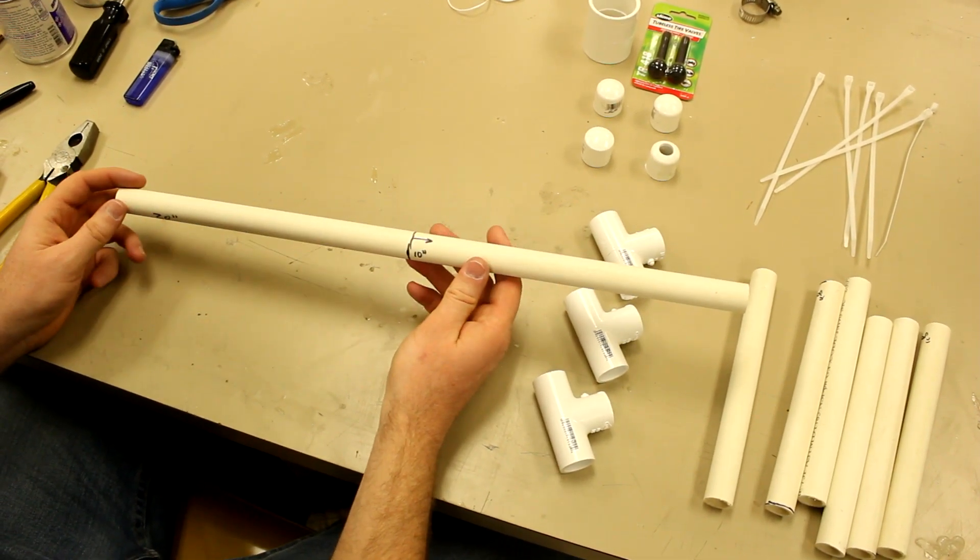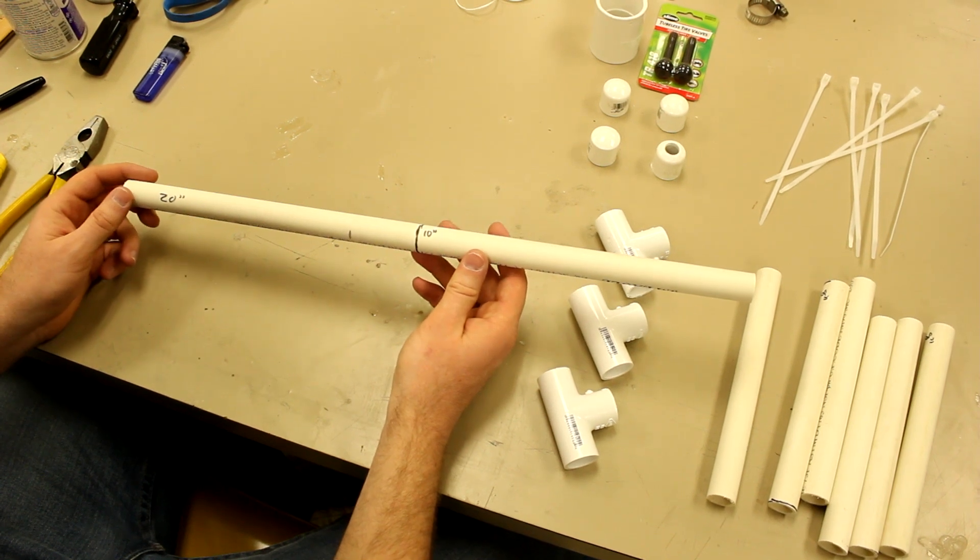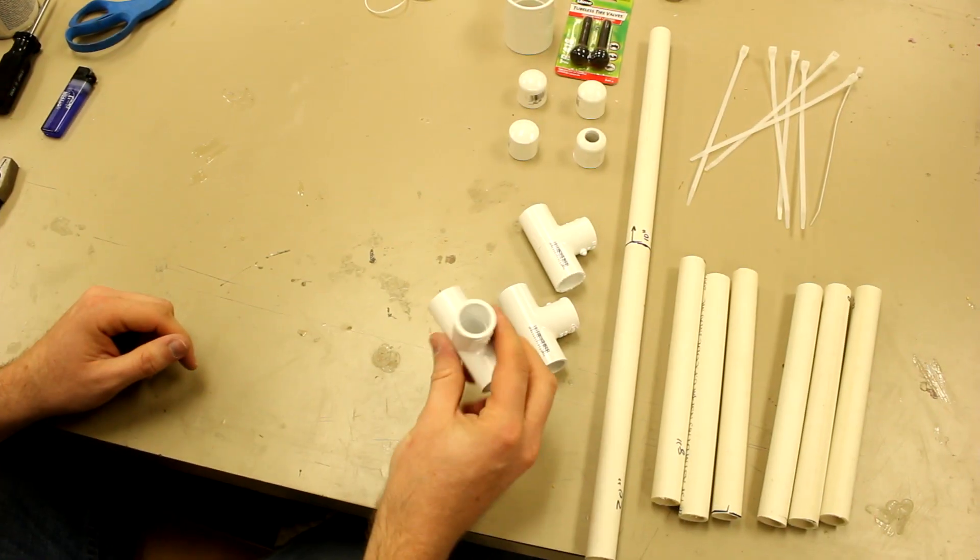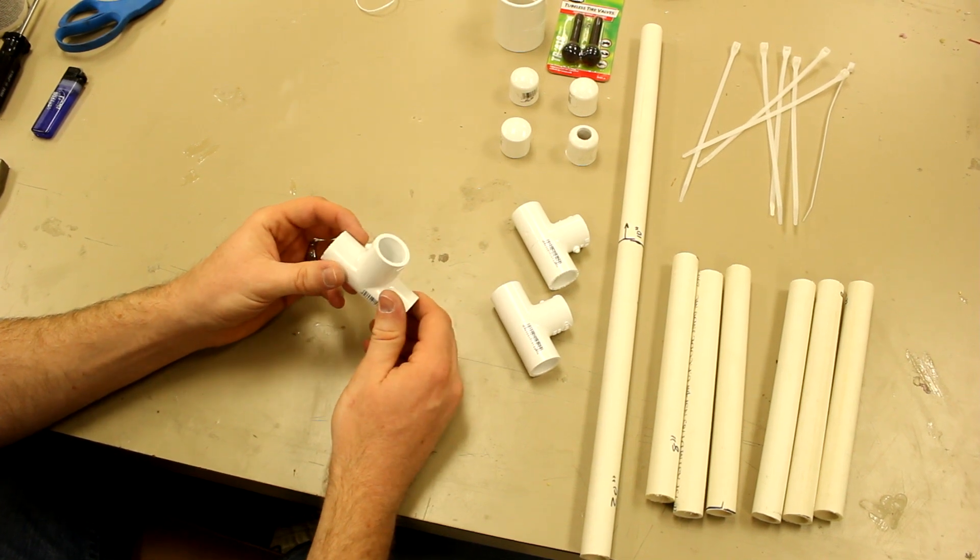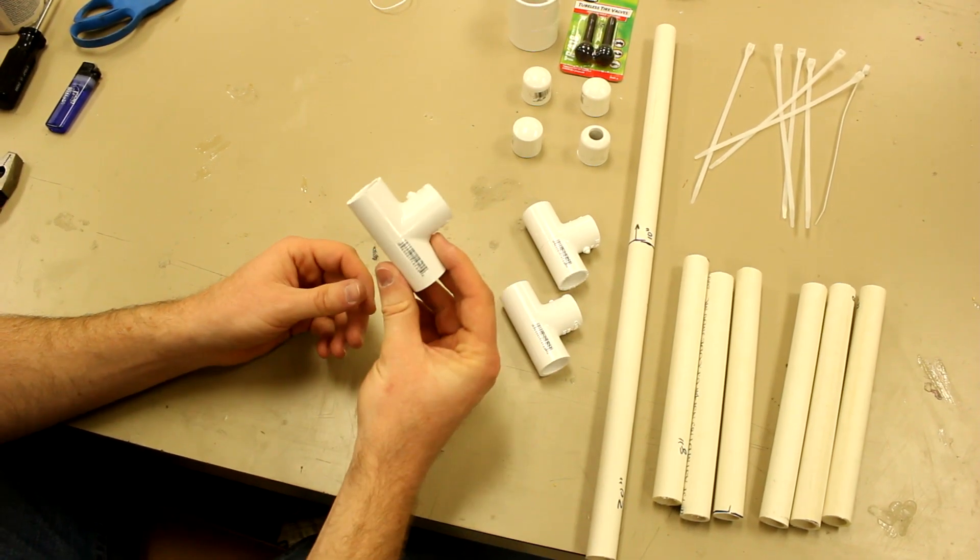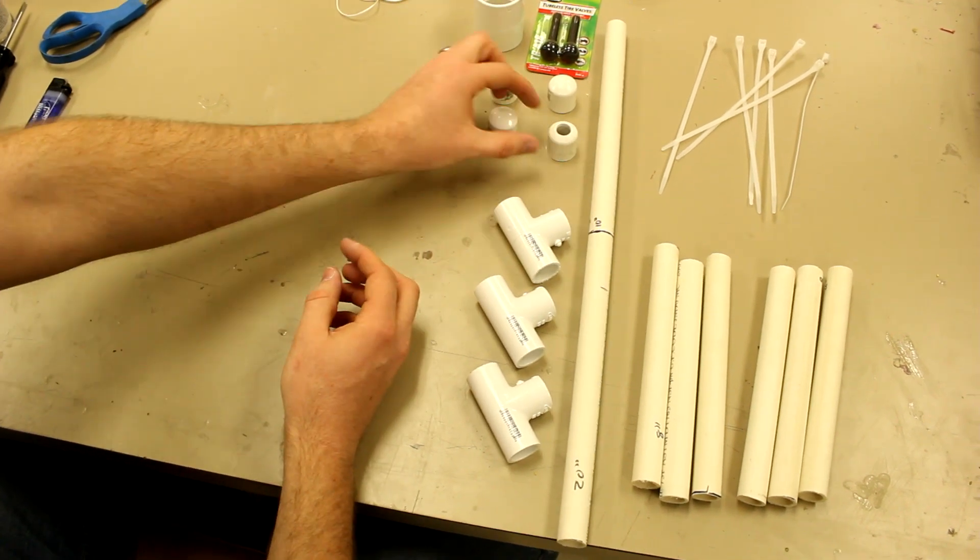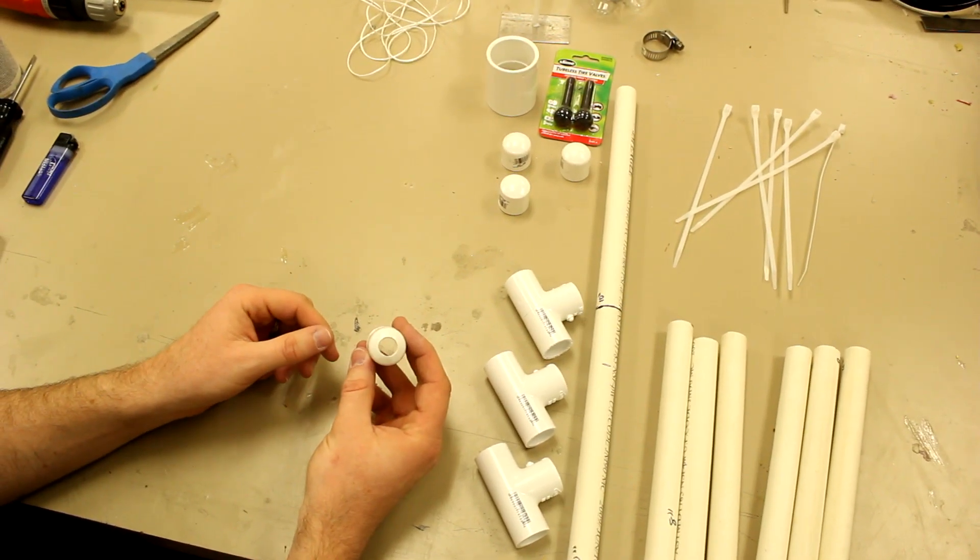The first thing you'll need is three two-foot sections of one half inch schedule 40 PVC tubing. You'll also need some basic PVC fittings, also one half inch. You'll need three T's. You'll need four end caps. One of those end caps you'll want to drill a half inch hole in.